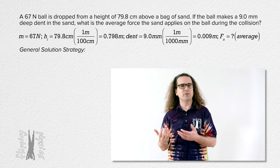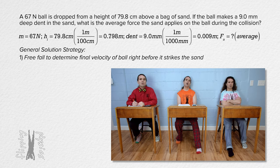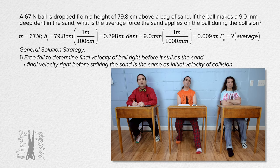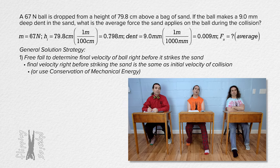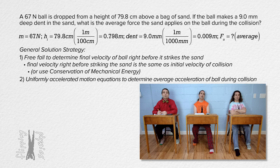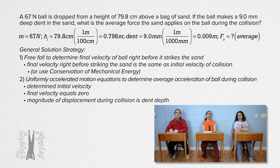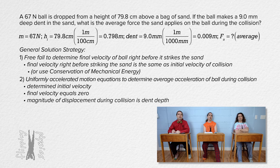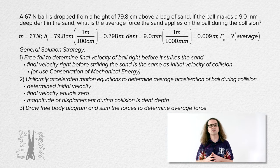Please walk me through a general strategy for solving this problem. We could use freefall — or conservation of mechanical energy — to determine the final velocity of the ball right before it strikes the sand, which is the same as the initial velocity of the collision. Then we could use uniformly accelerated motion equations to determine the acceleration during the collision, since we know the initial velocity, the final velocity is zero, and the displacement is 9.0 millimeters down. Then we could draw a free body diagram and sum forces in the y direction to find the average force. So we could use that three-step process.